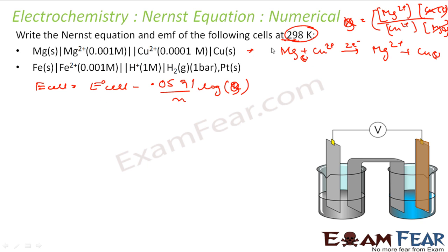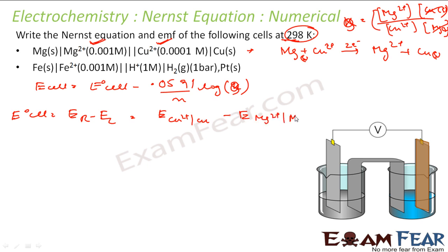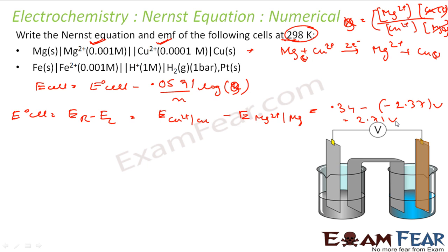E-naught cell can be found as E-right minus E-left. That is the reduction potential of Cu²⁺/Cu minus the reduction potential of Mg²⁺/Mg. From the table, Cu²⁺/Cu is 0.34 V and the reduction potential of Mg²⁺/Mg is minus 2.37 V. So E-naught cell equals 0.34 minus (minus 2.37), which gives 2.71 volt.